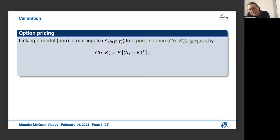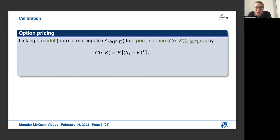What is the motivation for this work? In option pricing — I'm mostly working in computational finance — we start with the basics of an equity model. We start with a stochastic process S_T, which is the price process of an underlying stock. We match this model to a price surface of options. Let's look at plain vanilla call options: we take a maturity T, a strike price K, and this gives us the expected value of (S_T minus K) positive part. If you plot this as a function of T and K, we get the surface.